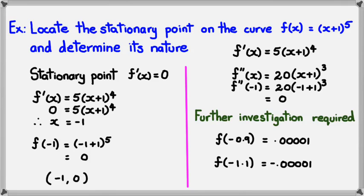So what I'm trying to do is figure out what's happening before and after the point. If I look in the middle, f(−1) = 0. As you can see, the y value is changing.